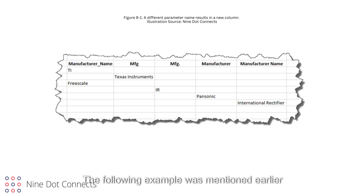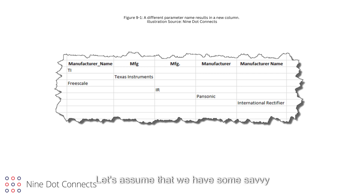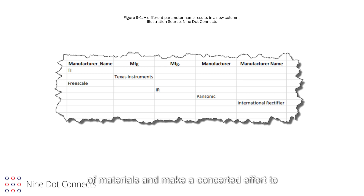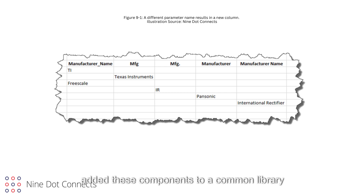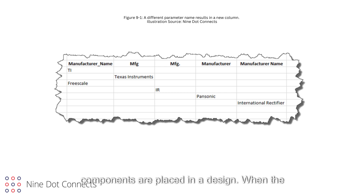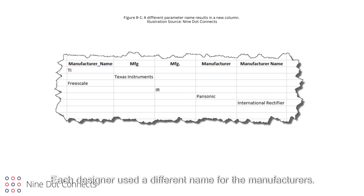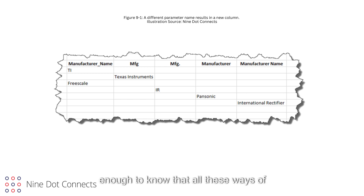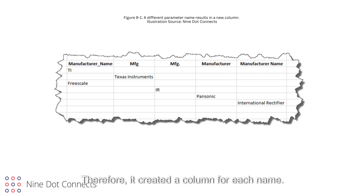The following example was mentioned earlier in the book, but it's worth repeating here when discussing intelligent data. Let's assume that we have some savvy designers who really want an automated bill of materials, and make a concerted effort to add the manufacturer's name and part number to each symbol that they create. They have added these components to a common library that everyone can access, and these components are placed in a design. When the bill of materials is created, a nasty surprise awaits.